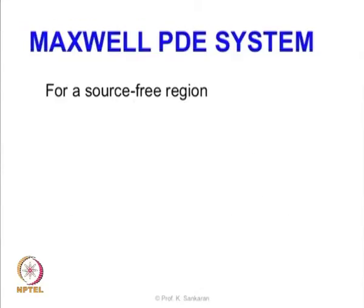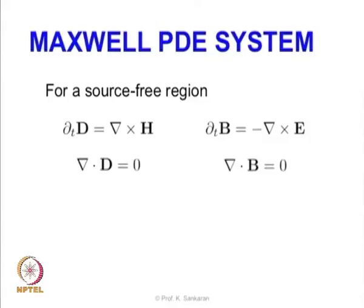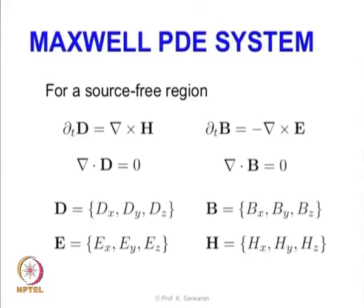In a source-free region we do not have the J component, so the equations simplify: the time derivative of D equals the curl of H, the time derivative of B equals minus the curl of E, and the divergence of D equals zero and the divergence of B equals zero. These are all field quantities in three dimensions, each with three components — for example, Dx, Dy, Dz are the scalar components in x, y, and z directions for D, and similarly for the other field quantities.